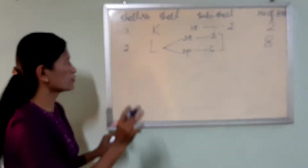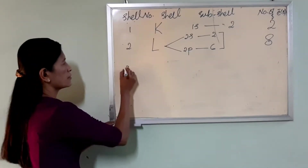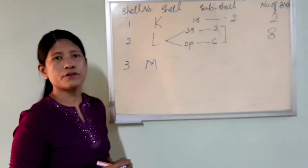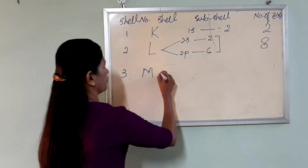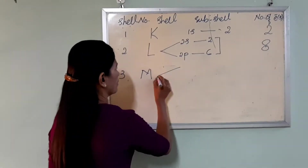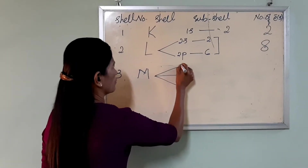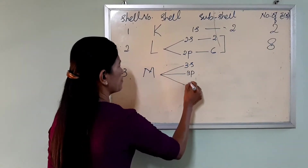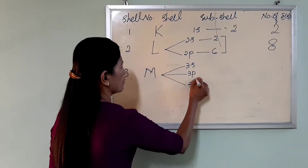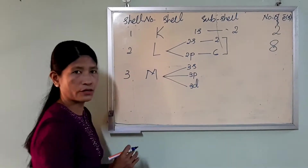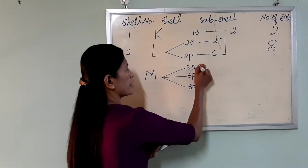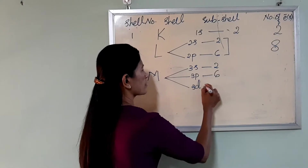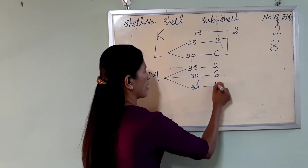Number three: N=6. It has three different parts — 3S, 3P, 3D. Capacities: 3S holds 2, 3P holds 6, 3D holds 10.